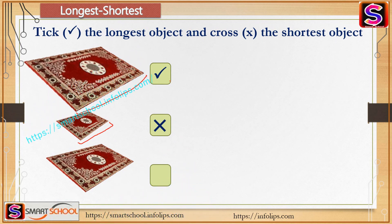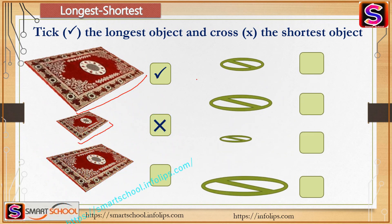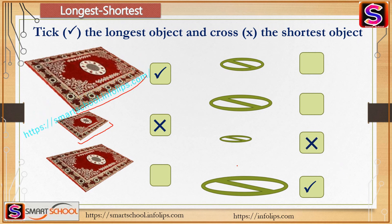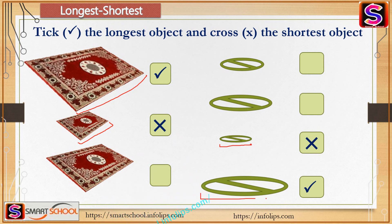Take one more example. The fourth one is the longest and the third one is the shortest, because the third has very little length and the fourth has more length than all the others.